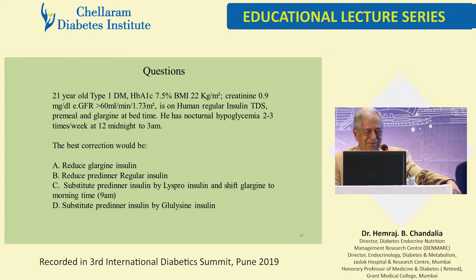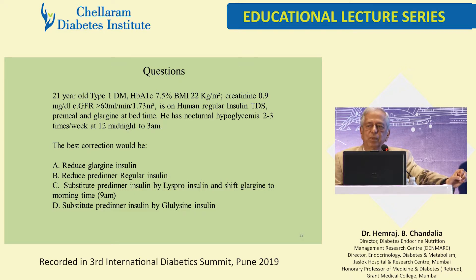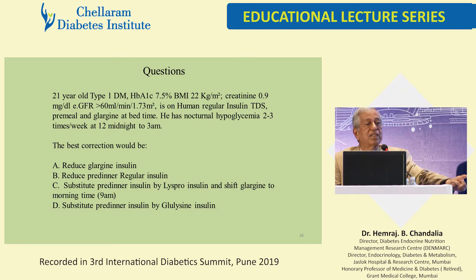The best answer is C: substitute pre-dinner insulin with a rapid-acting analog and shift glargine to morning. Normally we do not encourage analogs because of 2-3 times the cost, and in our country we use more analogs than we should — but this is a situation where an analog is worthwhile because human regular has quite long action and will produce nocturnal hypoglycemia. Also, there is now a case for giving glargine in the morning, especially in patients suffering from nocturnal hypoglycemia.